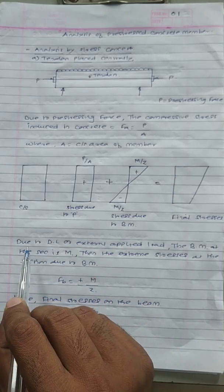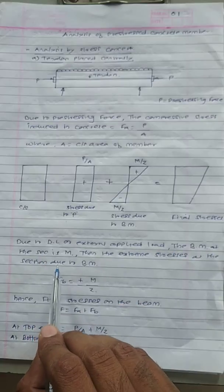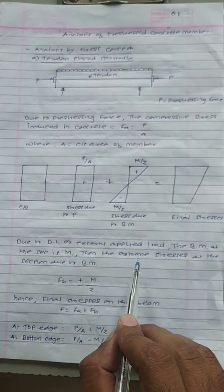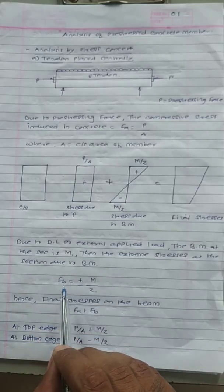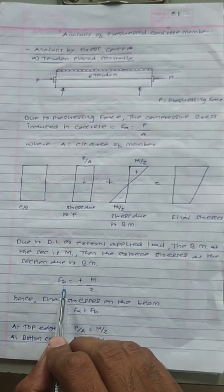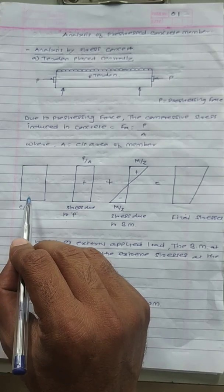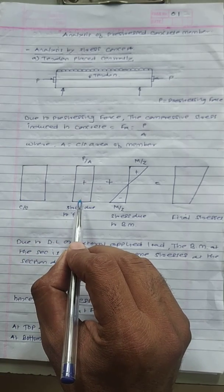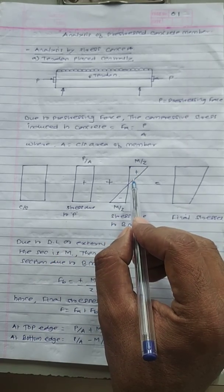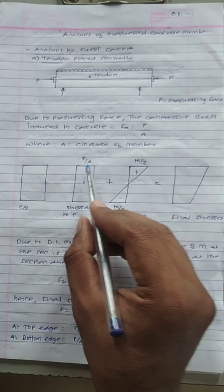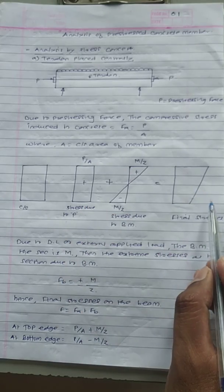Due to the dead load or external applied load, the bending moment at the section is M, and the extreme stresses at the section due to the bending moment is FB — the bending stress — calculated by M by Z. The cross section of the beam shows stresses due to pre-stressing force P and stresses due to bending moment M, giving M/Z and P/A, leading to the final stress diagram.